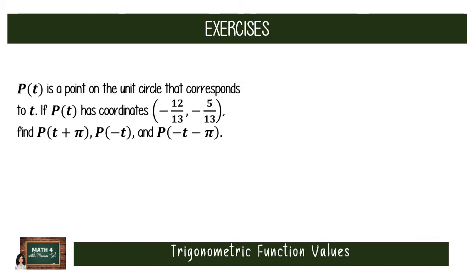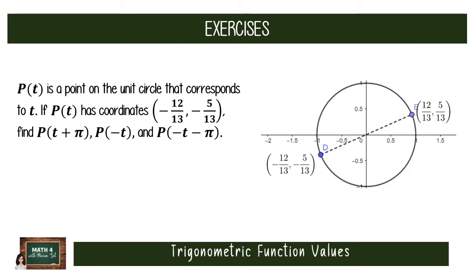Let's have another practice problem. Given p(t) as the point on the unit circle corresponding to t, with coordinates (−12/13, −5/13), find the coordinates of t + π, negative t, and negative t − π. For t + π, we rotate π radians (180 degrees) from the original point. This brings us to a point in quadrant 1, so the coordinates of p(t + π) are (12/13, 5/13).